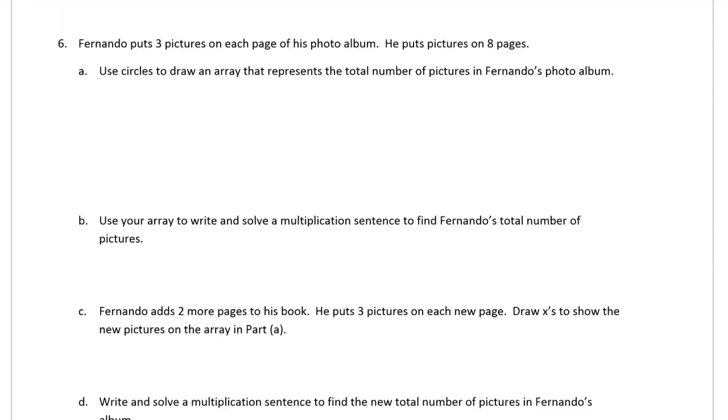We're on the second page now. Fernando puts three pictures on each page of his photo album. He's got eight pages and three pictures on each page. The each is important. Use circles to draw an array. We have to draw an array that represents the total number of pictures in his album. So he's got three on each page and he has eight pages. So that's eight groups of three. So I'm going to make eight rows of three.